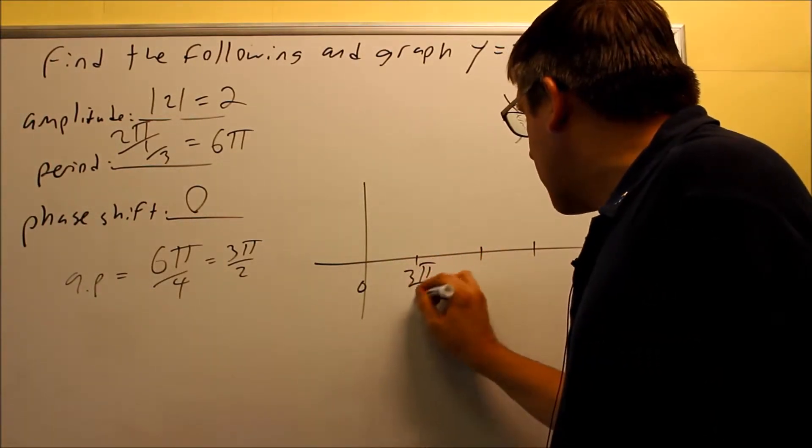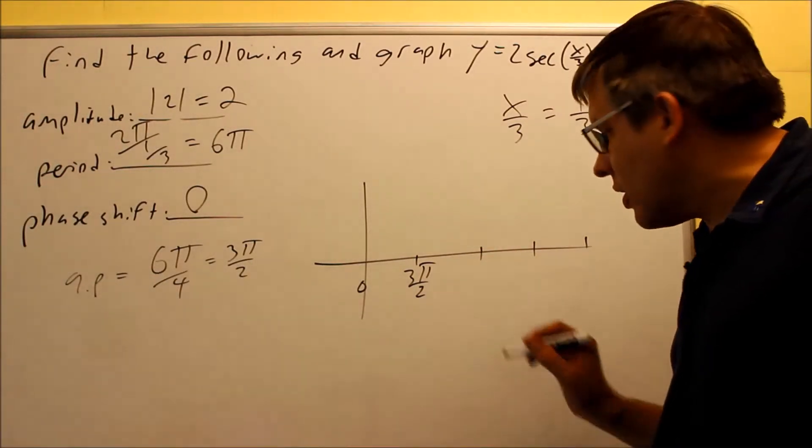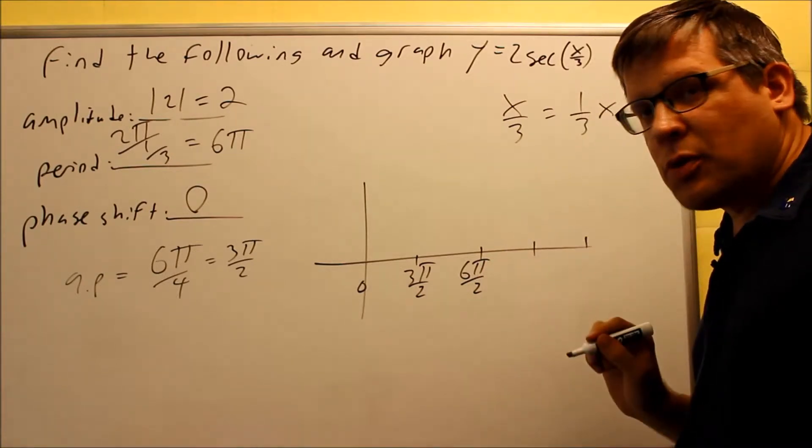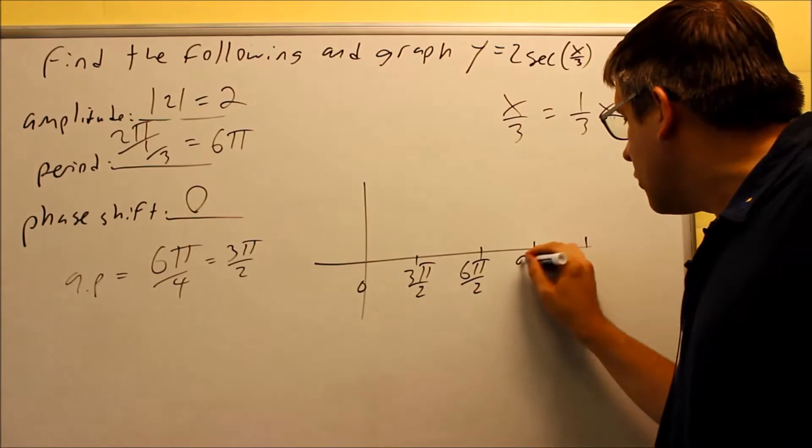So if I add 0 plus 3 halves is 3 halves π. If I add another 3π over 2 to this, I'm going to get 6π over 2, which we can reduce, but I'll leave it at 6π over 2 and make it easier for common denominators. Add another 3π over 2, 9π over 2.